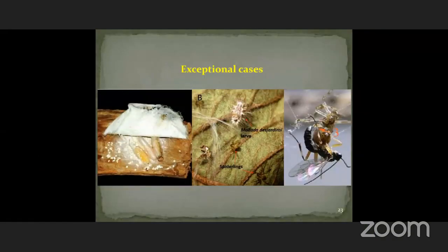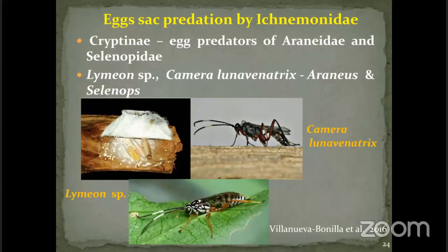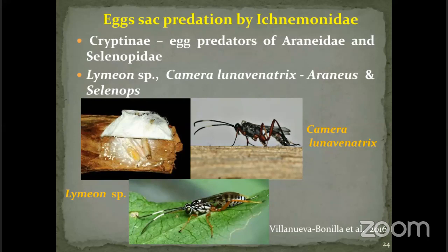Some exceptional cases include egg predation in ichneumonids. We all might know ichneumonids as parasitoids — where they develop on a single host and kill the host in the process. An exceptional case is the members of Kryptinae — the genera Lymeon and Acaenitus — both known to be egg predators, consuming several eggs of spiders and the egg sacs of spiders belonging to Araneidae and Selenopidae.